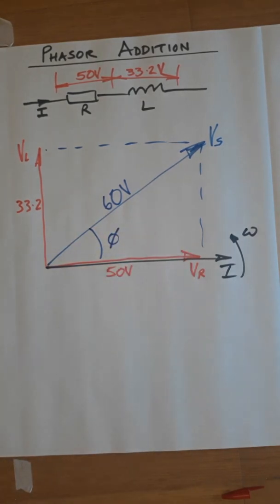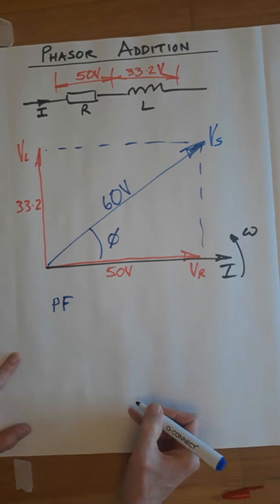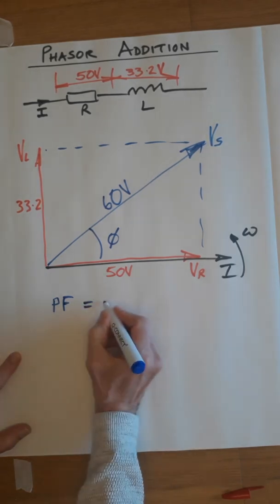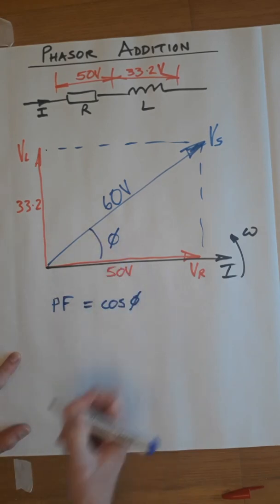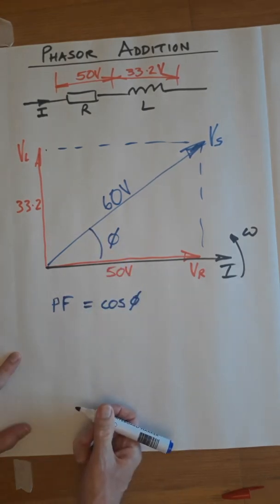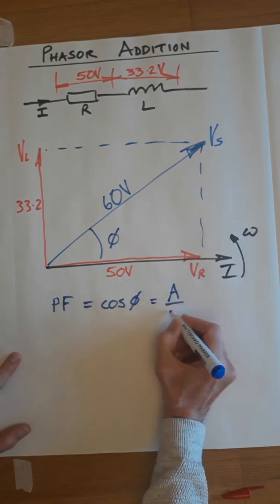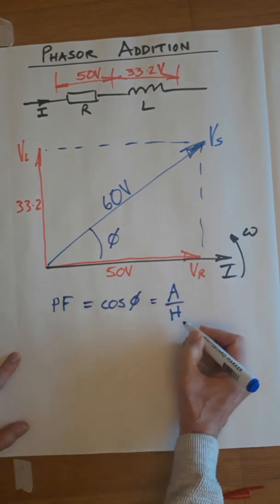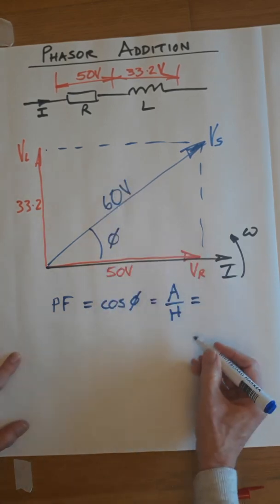The second part of the question, I've asked you to find power factor. Power factor can also be written as cos phi. It's literally the cosine of this angle. So, cos phi is adjacent over hypotenuse. And if we use these numbers, it's 50 over 60.